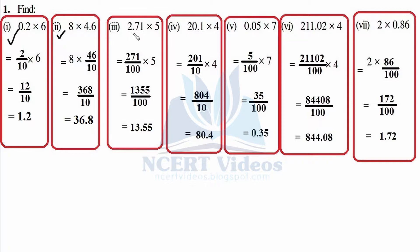For 2.71 × 5: write 271 as it is, representing the decimal with 1, counting digits — 1, 2 — therefore 2 zeros, into 5. Now 5 × 1 is 5, 5 × 7 is 35, 3 carry. 5 × 10 plus 3 is 13, 15. Divided by 100. Writing 1355 as it is, counting number of zeros — here it is 2 — therefore after 2 decimal places: 1, 2. So 13.55.